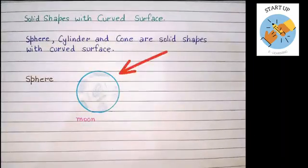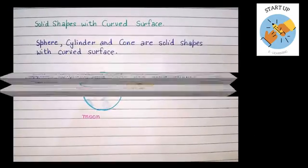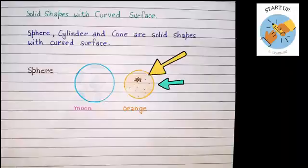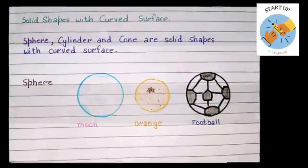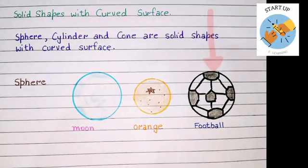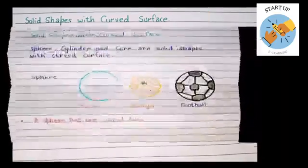Let's see some more examples of these sphere. Moon, the second example is an orange. The third example is a football. Let's understand some qualities of these spheres.